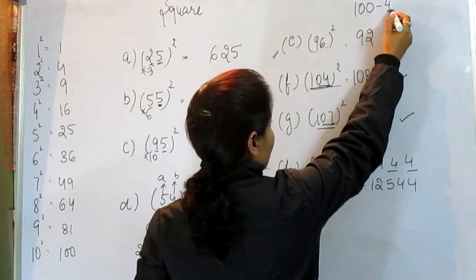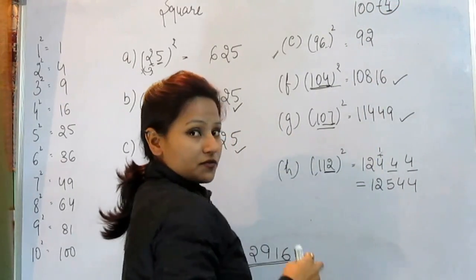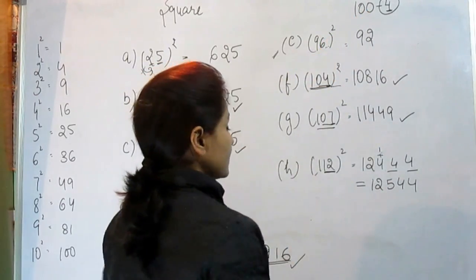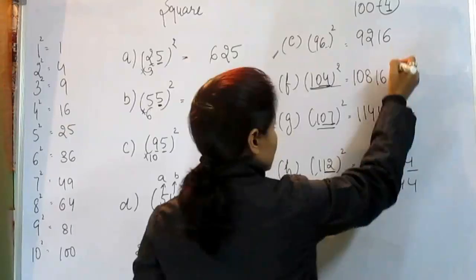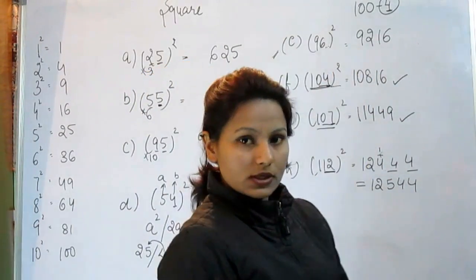Now, the square of this number which we have subtracted from 100 and from 96. So what is the square of this number? That is 16. What is the answer? 9, 2, 1, 6.